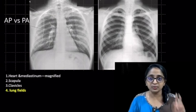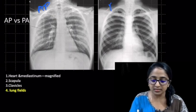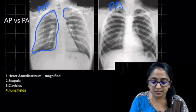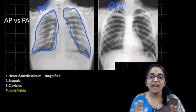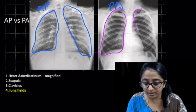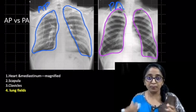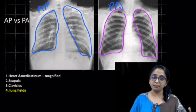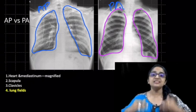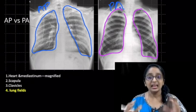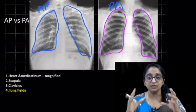The fourth difference between AP and PA projection is about the lung fields. In the AP view, you can see that the lung fields appear smaller and more hazy, whereas in the PA radiograph the lung fields appear sharp and have more preserved volume. This is because AP radiograph is usually done in a supine or recumbent position. In such cases, the diaphragm pushes up the lung and compresses it, giving an appearance of decreased lung volume.